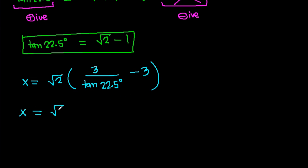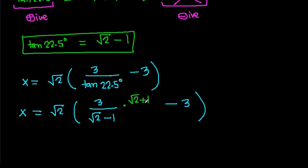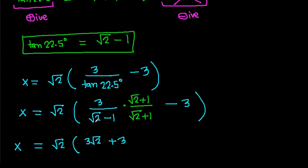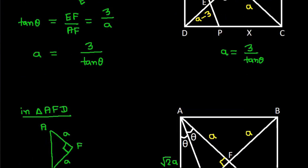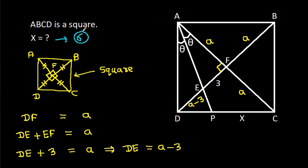Now X = root 2 times (3 over (root 2 minus 1) minus 3). Multiplying by (root 2 + 1) over (root 2 + 1), we get X = root 2 times (3 root 2 + 3 minus 3) = root 2 times 3 root 2 = 6. So X equals 6.